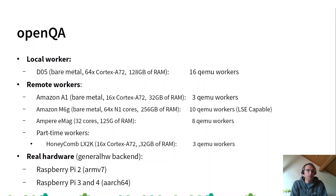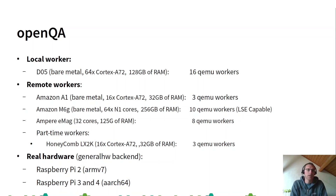We also have remote workers, two from Amazon Web Services. The first one is the A1, which allows us to have 3 QEMU workers. And we have the Amazon M6G machine, which allows 10 QEMU workers.